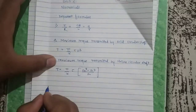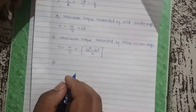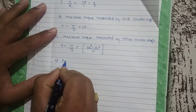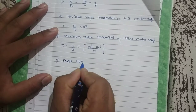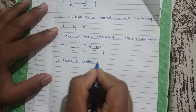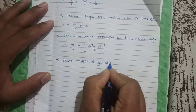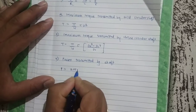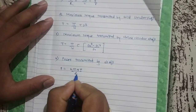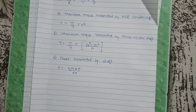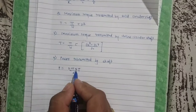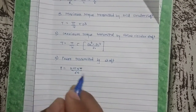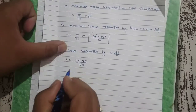Next formula — this formula we are going to use in numericals. Fourth one: power transmitted by shaft. That is P is equal to 2πNT divided by 60. Here 2π is constant, N is speed in RPM, T is torque.